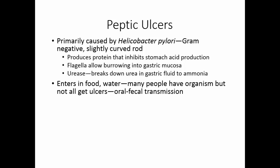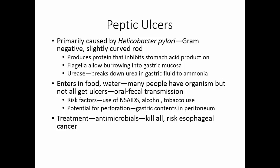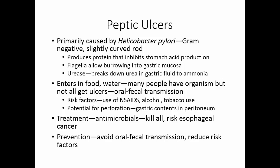Helicobacter enters through food and water. Many people carry the organism but not all develop ulcers. It is believed to be transmitted via the oral-fecal route. People with Helicobacter are more likely to develop ulcers if they use NSAIDs, alcohol, or tobacco. Because a gastric ulcer may eat through the stomach lining, perforation is possible, and gastric contents can spill into the peritoneum causing peritonitis. Treatment is about three weeks of multiple antibiotics. Interestingly, completely eradicating H. pylori appears to increase the risk for esophageal cancer, so prevention focuses on avoiding oral-fecal transmission and good hand washing.